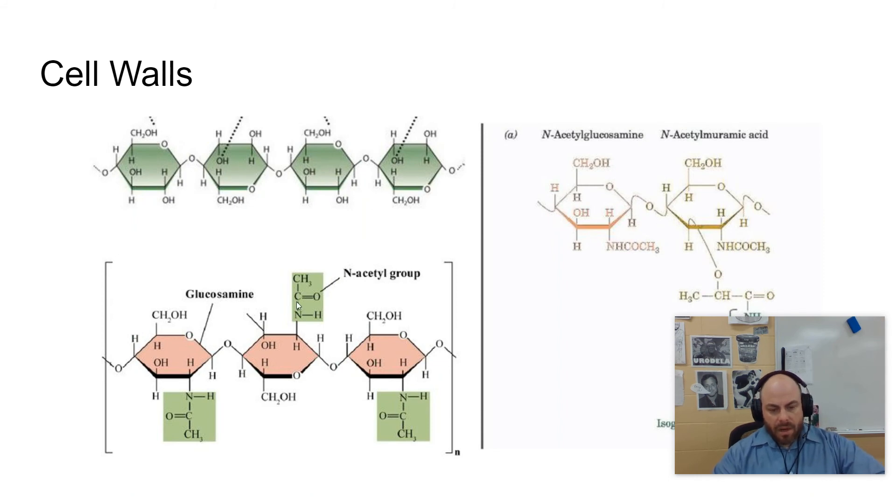Fungi are composed of a carbohydrate called chitin, which is again, just another polysaccharide. Chitin is also what makes up exoskeletons for insects as well, and arthropods. So very strong protein.